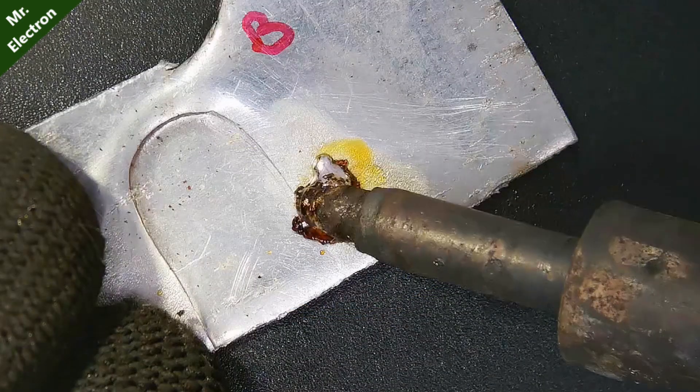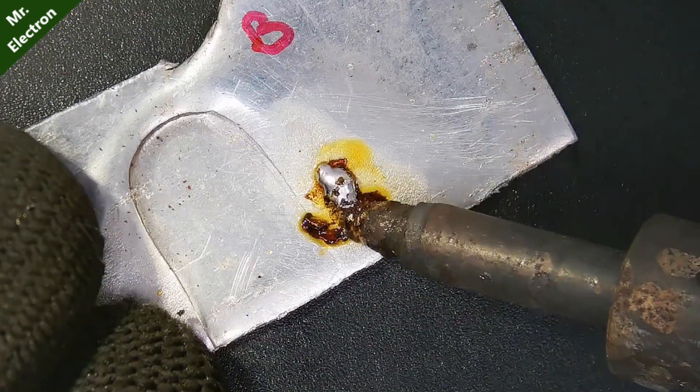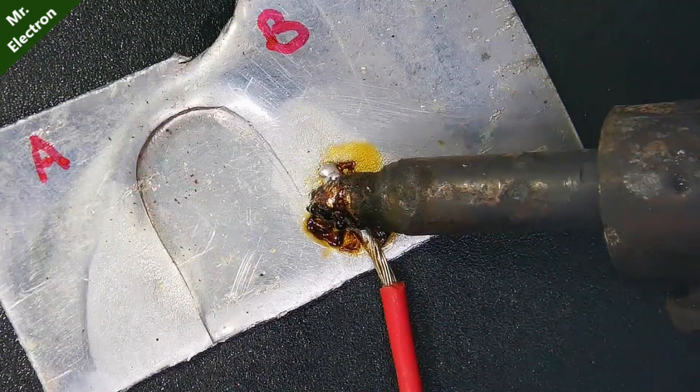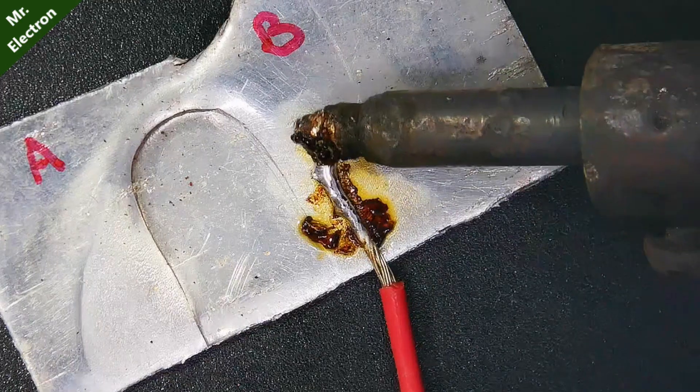Step 1. Put some solder on area B. After that, take the red wire and try to solder it on that area using your hot soldering iron.